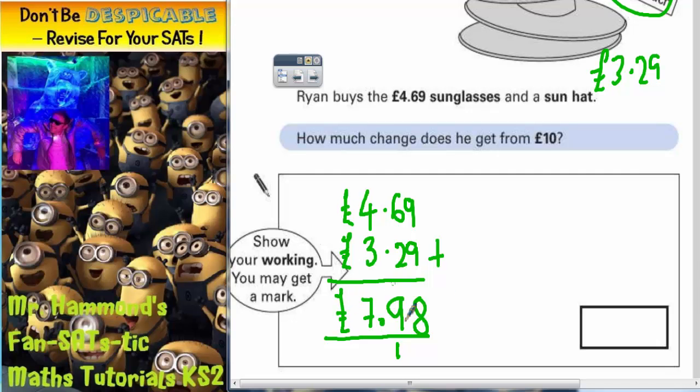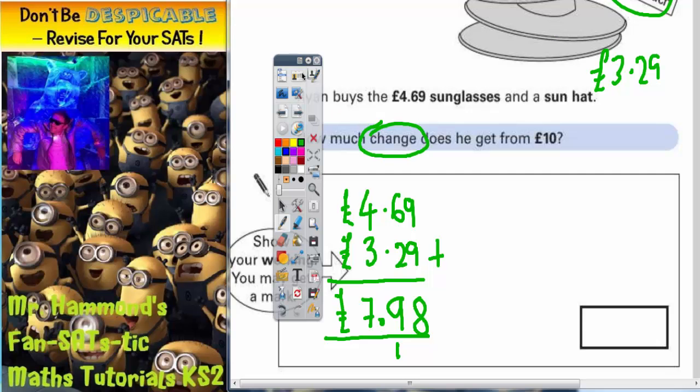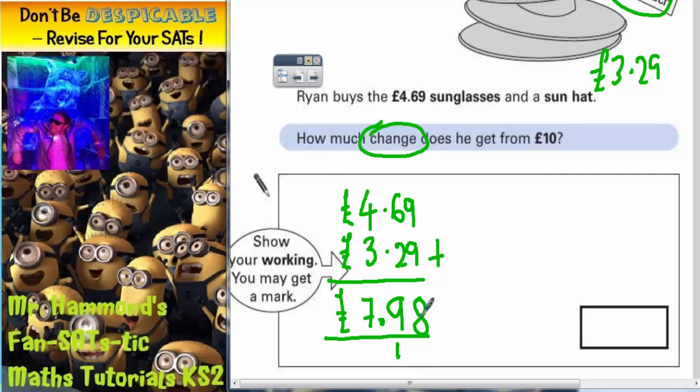So he's actually spending seven pound ninety-eight. But it does say how much change does he get from ten pounds. So if we can count back up from seven ninety-eight to ten pounds, we will get the amount of change. So if we add on an extra two pence that will get us to eight pounds.